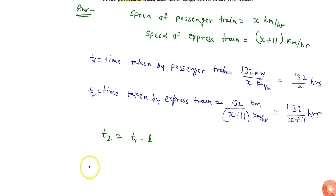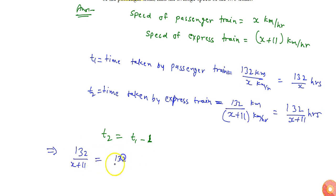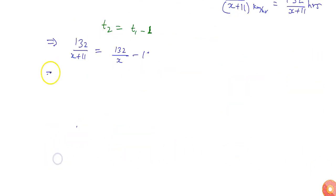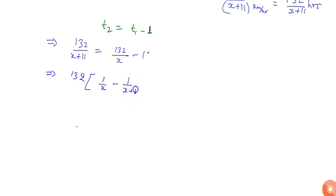Since express train takes one hour less than the passenger train, if I put the values of t1 and t2, I will get: 132 by x plus 11 equals 132 by x minus 1. This can be rewritten as 132 times (1 by x minus 1 by x plus 11) equals 1.